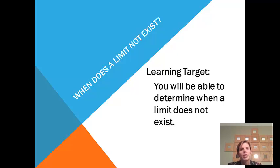In our previous examples, you'll notice that we always are able to get an answer. There was always one y value that the function was approaching from both sides, from the left and from the right. But sometimes there is not a limit. So at the end of this lesson, you'll be able to determine when a limit does not exist.